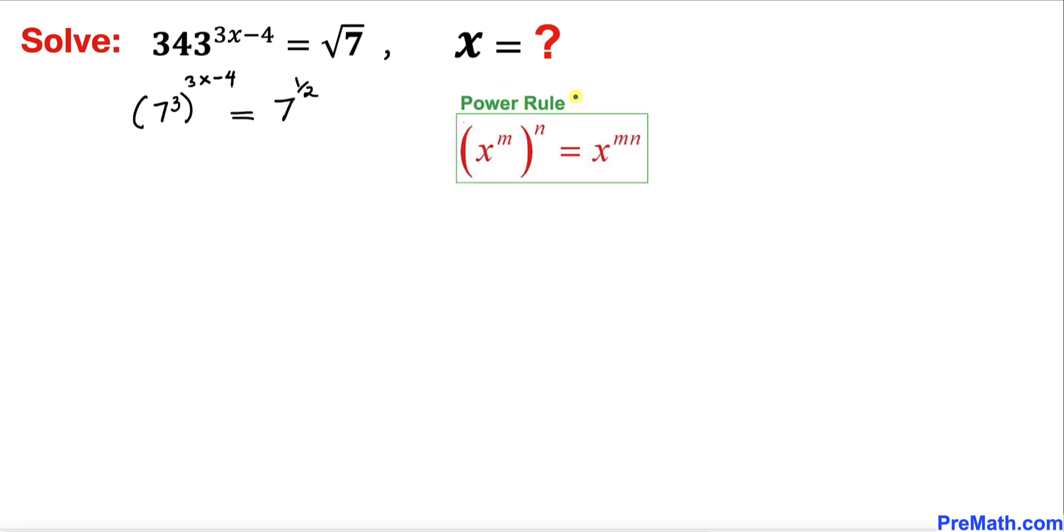Now let's recall this power rule of exponents. According to this rule we can multiply these nested exponents. So therefore the left hand side could be written as 7 power 3 times 3x minus 4 equal to 7 power 1 over 2. In this next step I have distributed this 3 as you can see over here and now we can see that our bases are same on both sides.